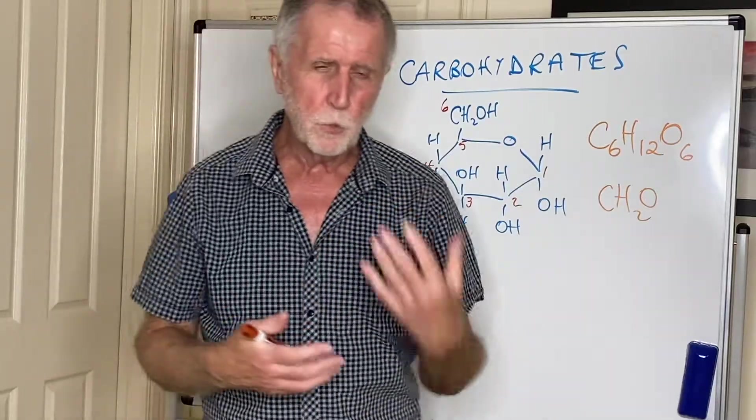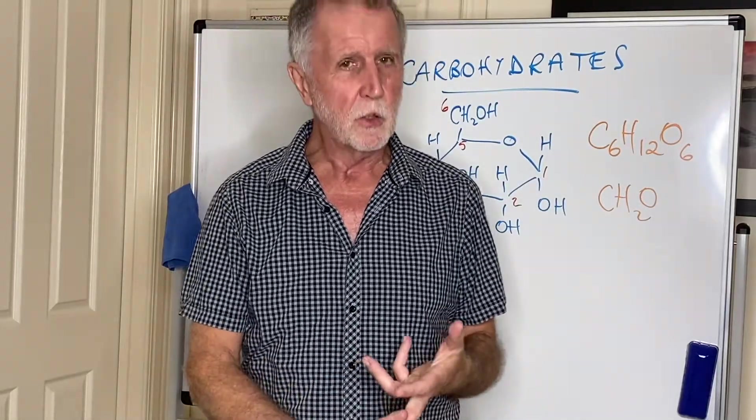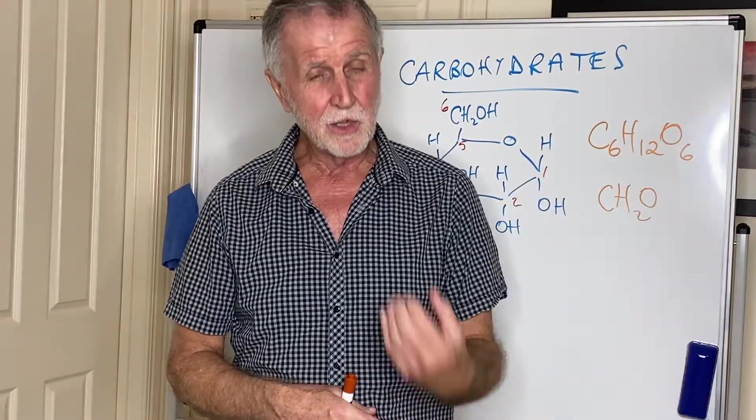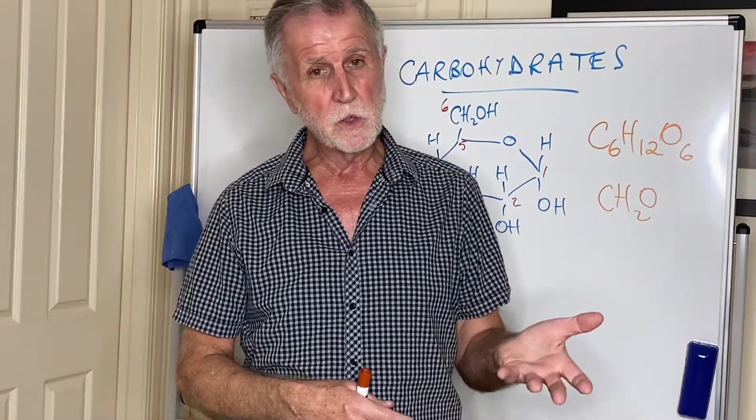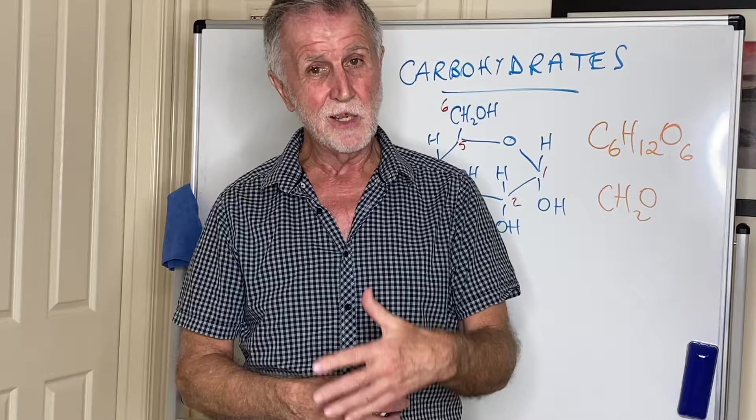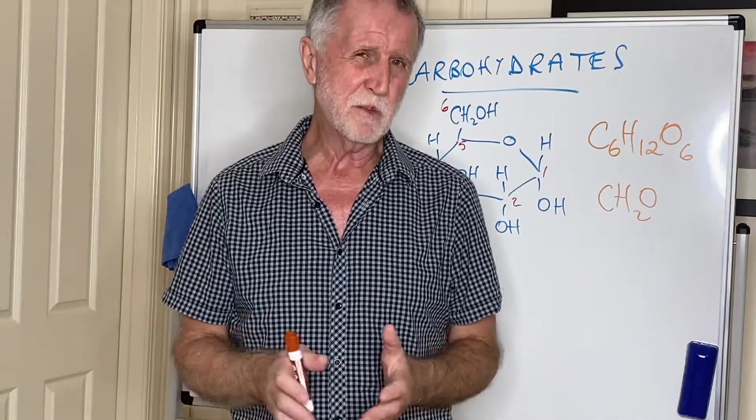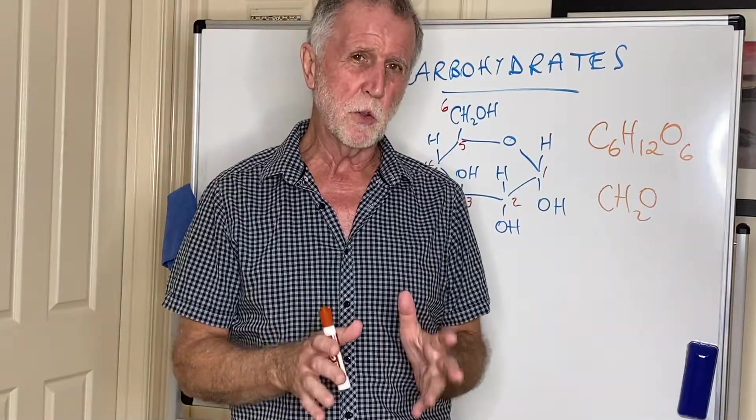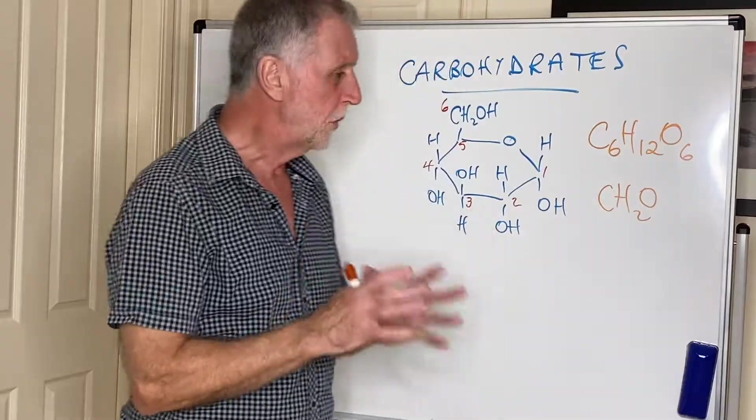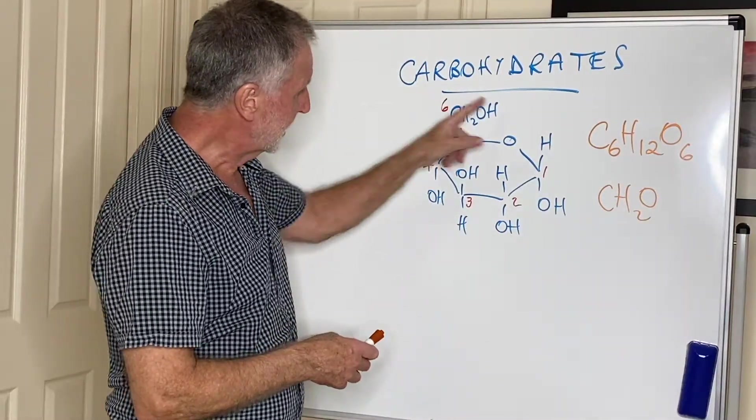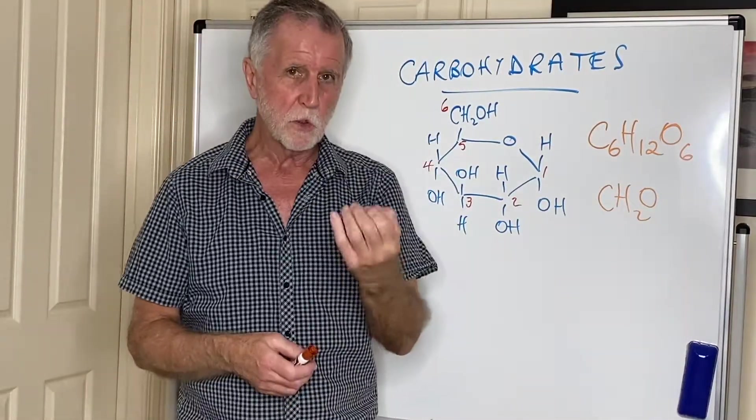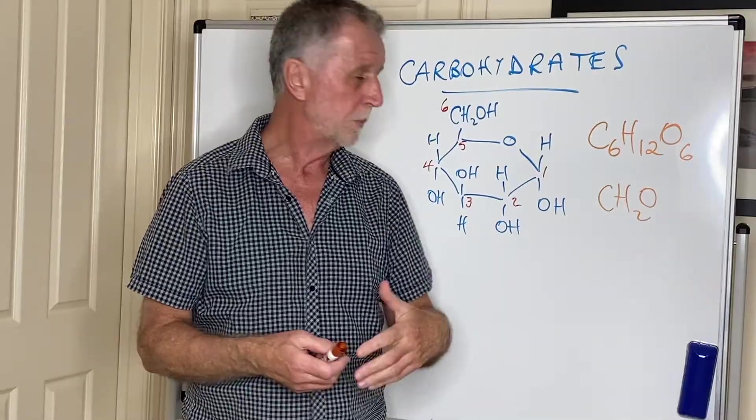In their open chain formats, glucose is something called an aldose because it contains an aldehyde group, and fructose is a ketose because it contains a ketone group. To be honest, I don't think I would really worry too much about those terms. What I would know is that these single units, the monomers that make up the carbohydrates, are basically called monosaccharides.